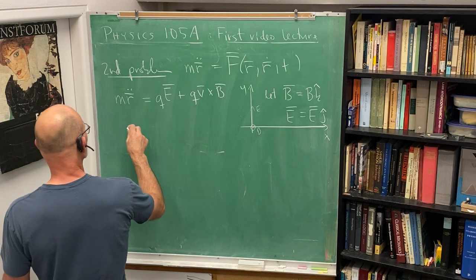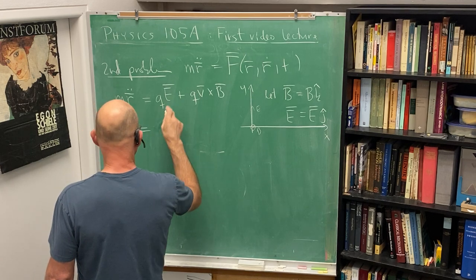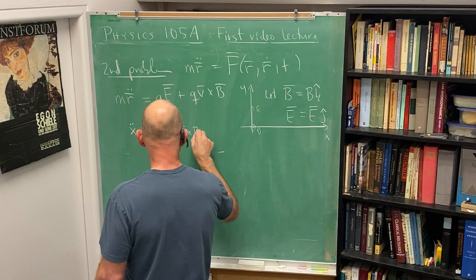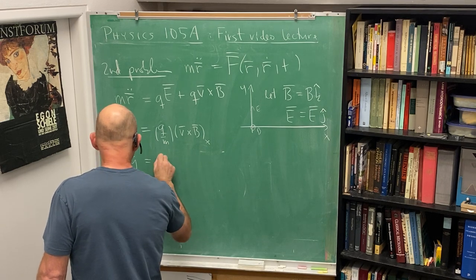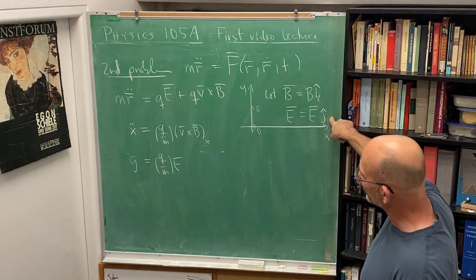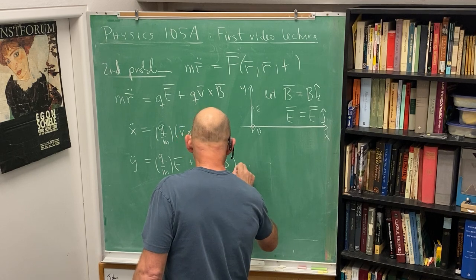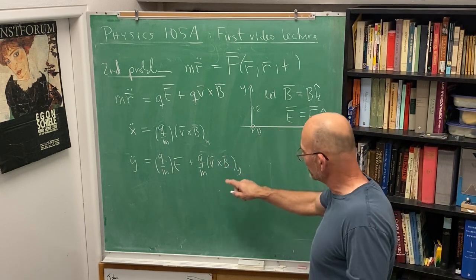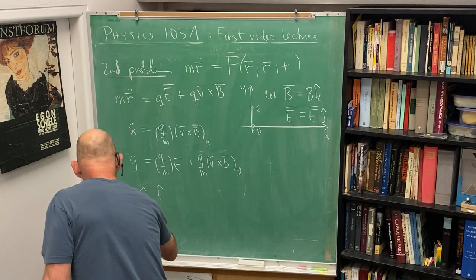So we have to write this down. And so far we would have x double dot is equal to q over m times v cross B, x component. And y double dot is going to be q over m times E, because E has the y component right there, plus q over m times v cross B, y component. So there's our differential equation.